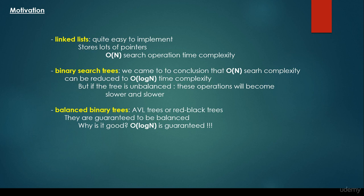We came to the conclusion that O(n) search complexity can be reduced to O(log n) time complexity. But it's very important that if the tree is unbalanced, these operations will become slower and slower. And that's why balanced binary trees have come to be — such as the AVL tree or red-black tree. They are guaranteed to be balanced, and because of that, O(log n) time complexity is going to be guaranteed.